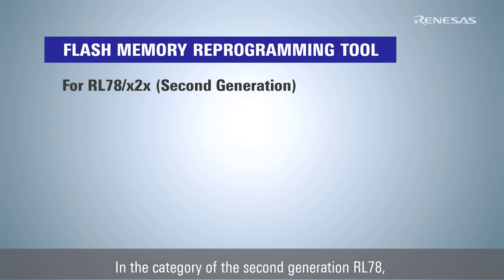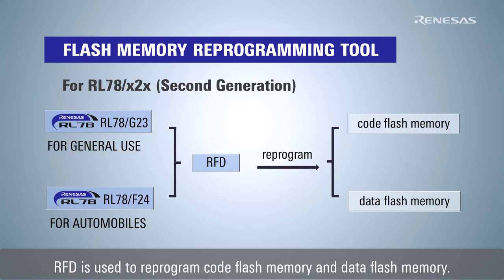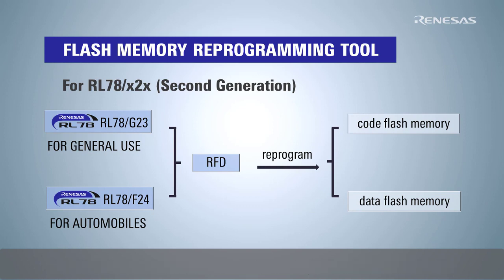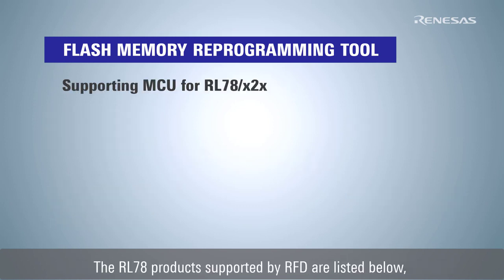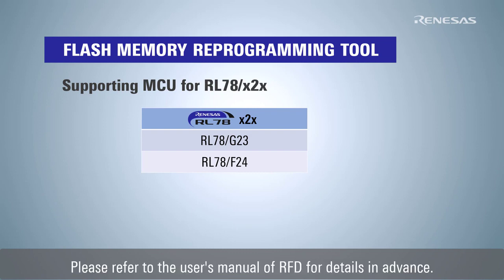In the category of the second generation RL78, such as RL78G23 and RL78F24, RFD is used to reprogram code flash memory and data flash memory. The RL78 products supported by RFD are listed below, but some products may not be supported. Please refer to the user's manual of RFD for details in advance.